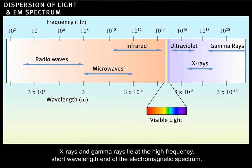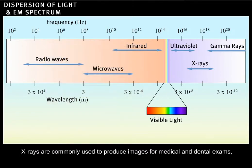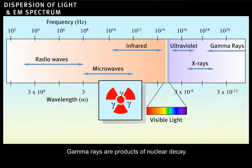X-rays and gamma rays lie at the high-frequency, short-wavelength end of the electromagnetic spectrum. X-rays are commonly used to produce images for medical and dental exams. Gamma rays are products of nuclear decay.